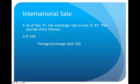On December 31st — the end of the year — the customer hasn't paid yet, but we must record an adjustment. The exchange rate has fluctuated from $1.80 to $1.83. The difference is three cents per pound, and over 1,000 pounds that works out to a $30 difference, so we record a $30 journal entry.